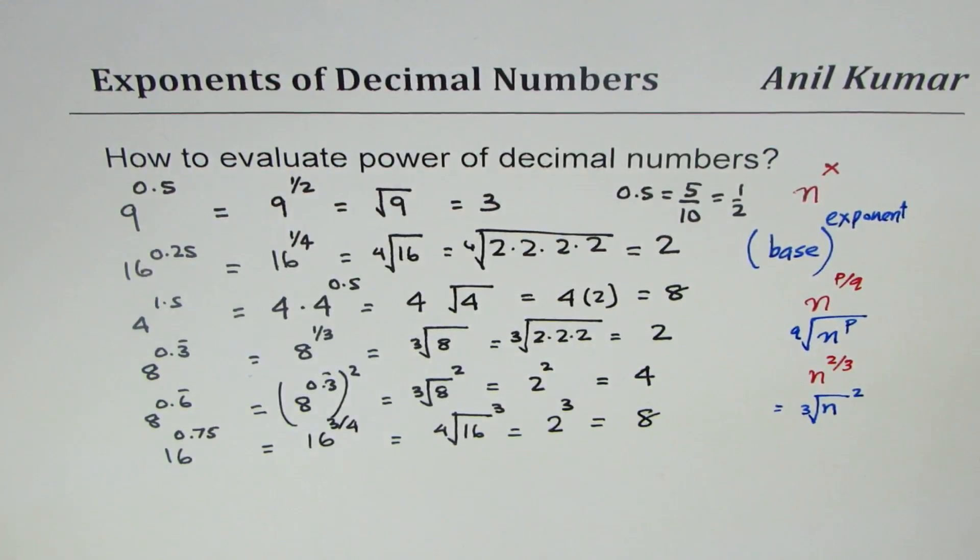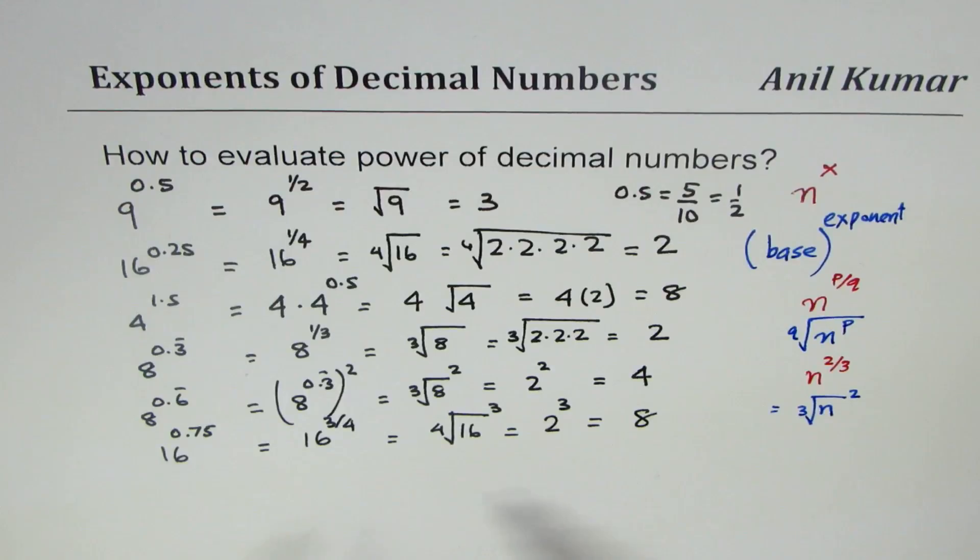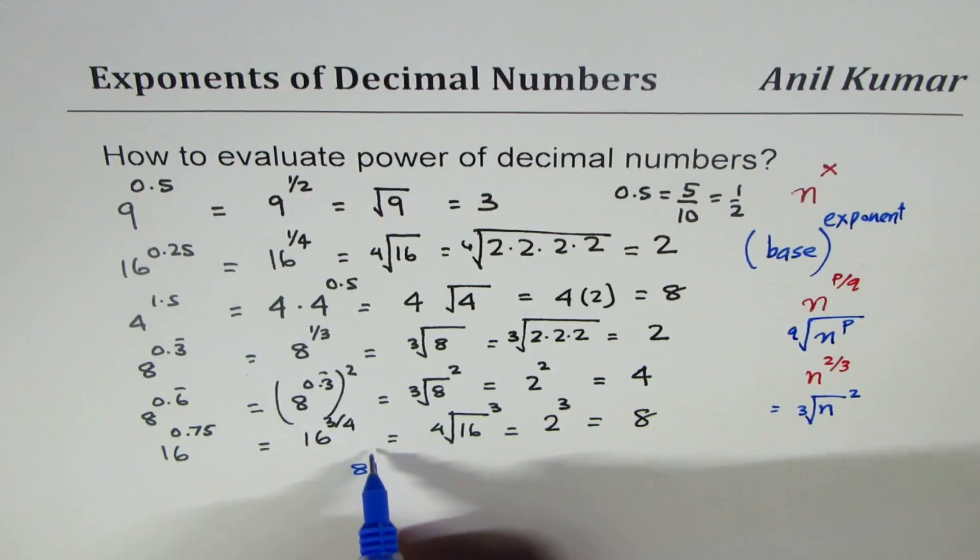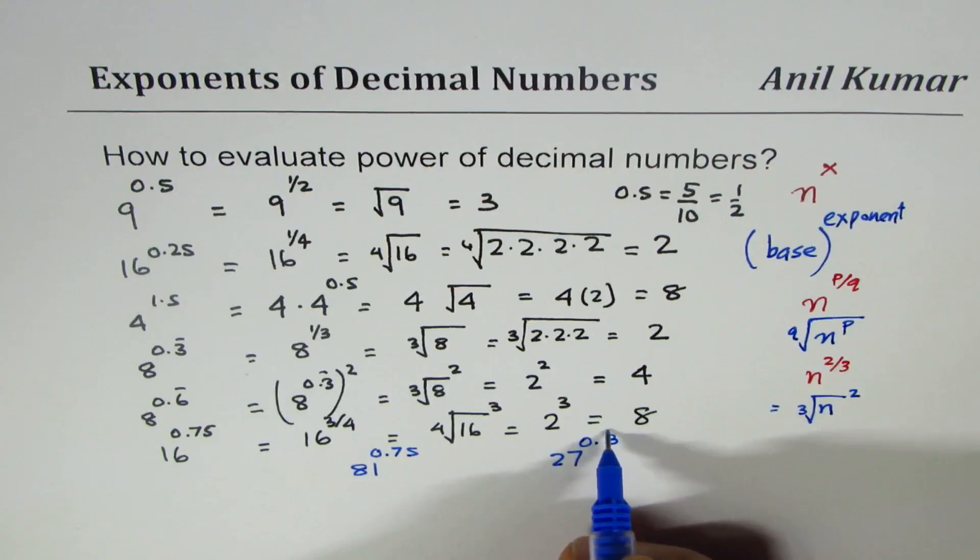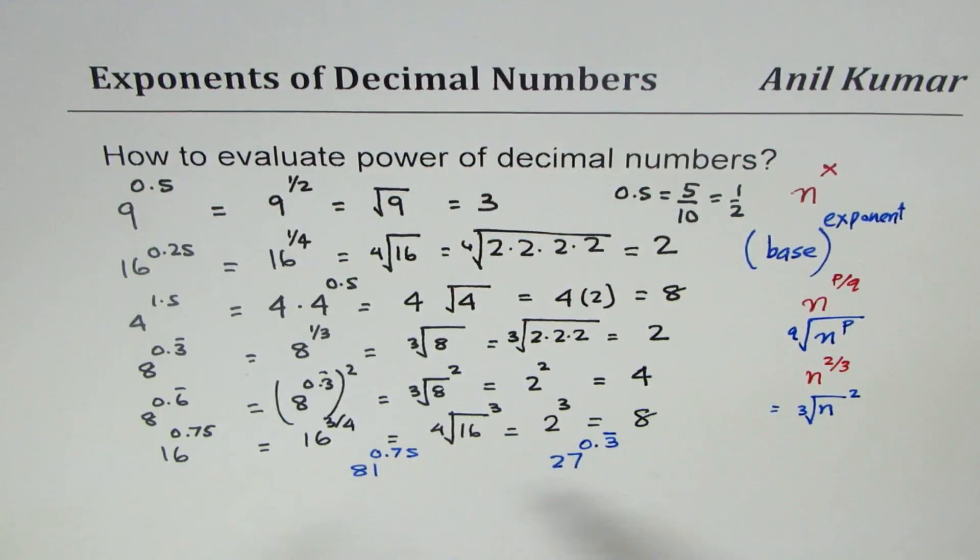Now with these examples, I hope you can find powers when given in decimals. You can take a few practice questions: that could be 81 to the power of 0.75, or we could have 27 to the power of 0.3 recurring. Try these two questions and write your answers in the comments below.